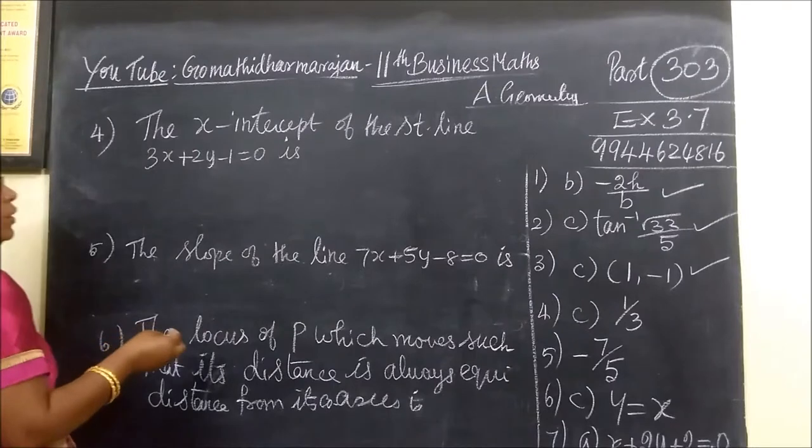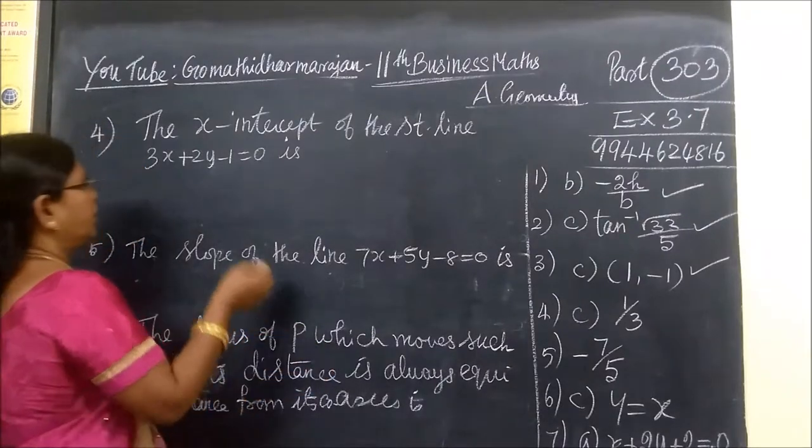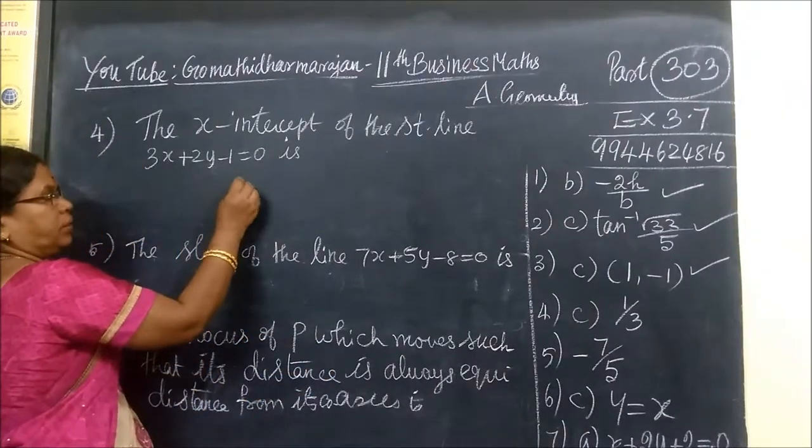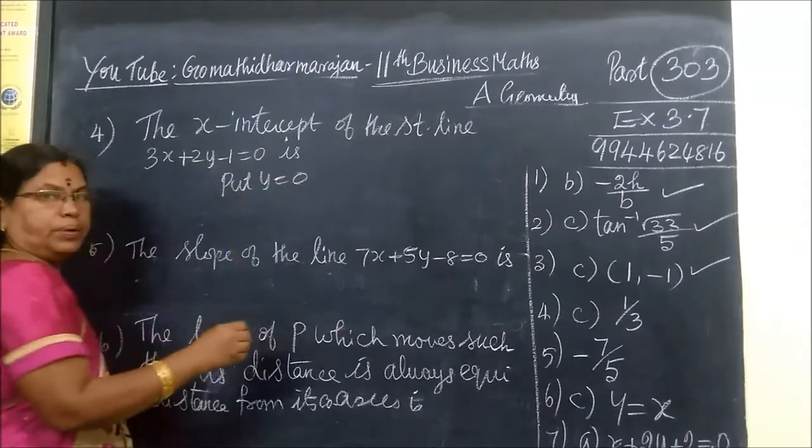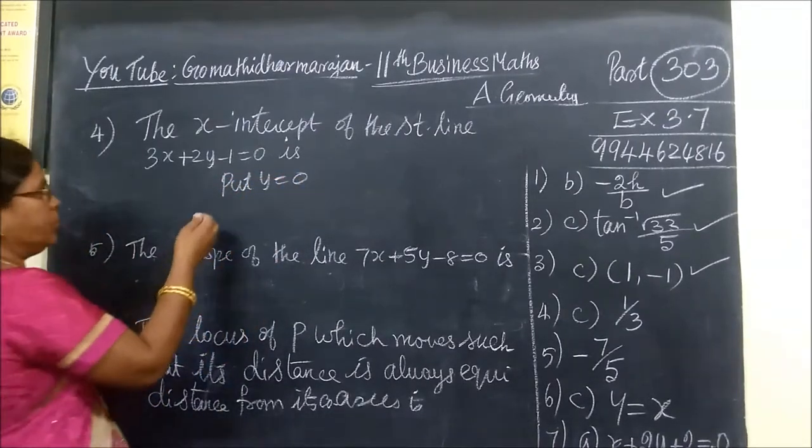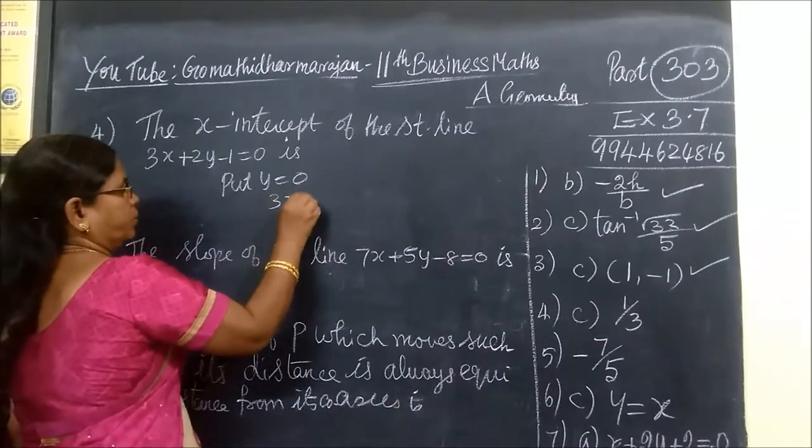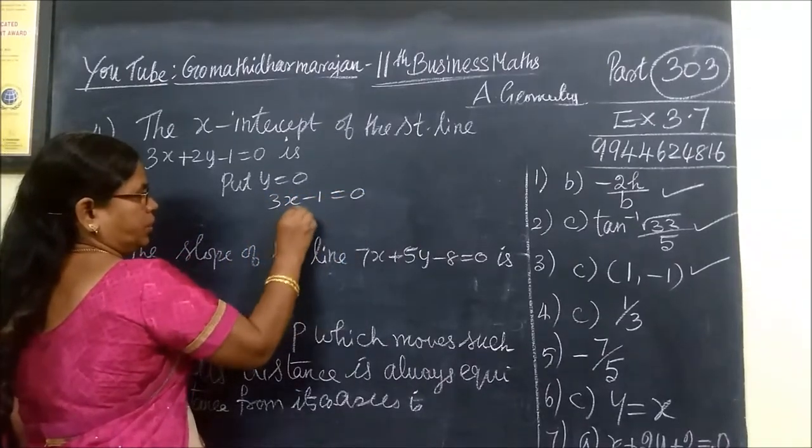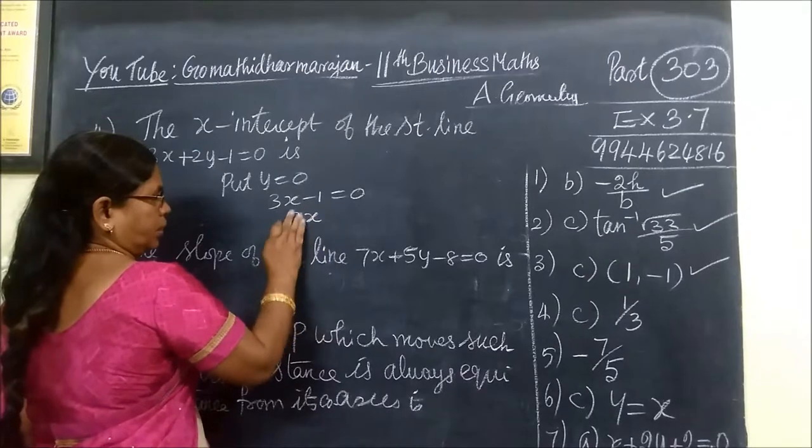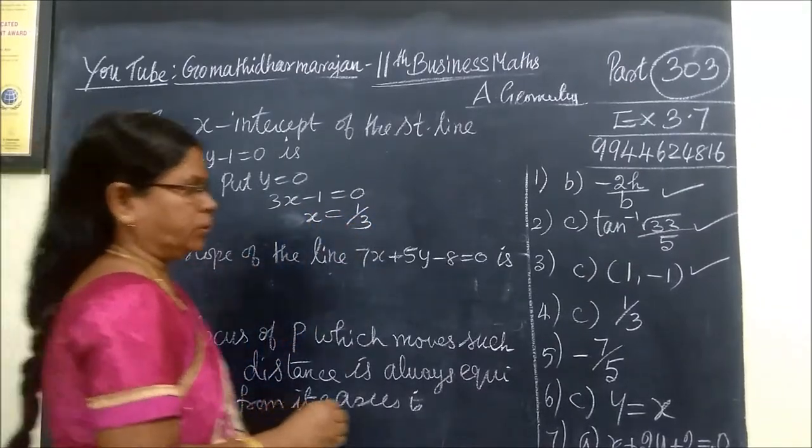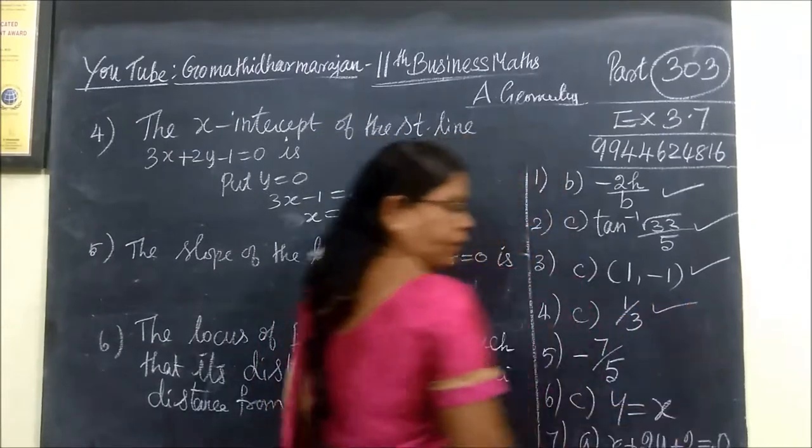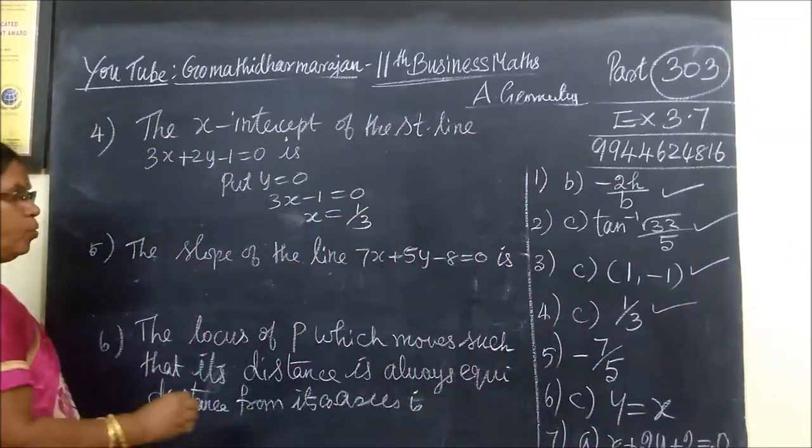The x-intercept of the straight line: x-intercept means y = 0. So 3x - 1 = 0, therefore 3x = 1, and x = 1/3.